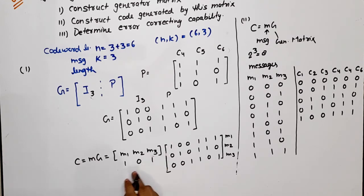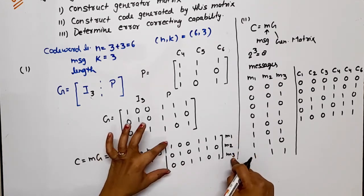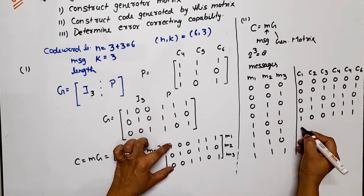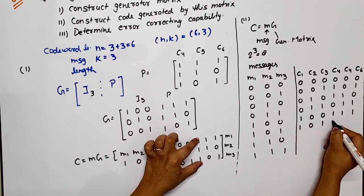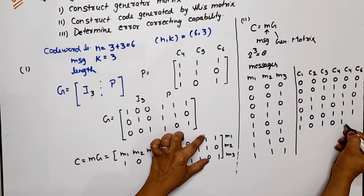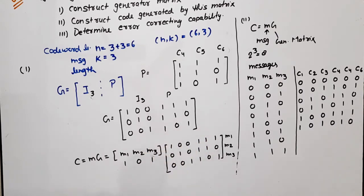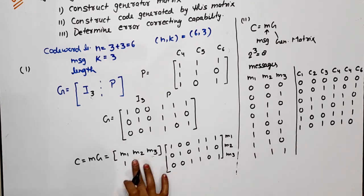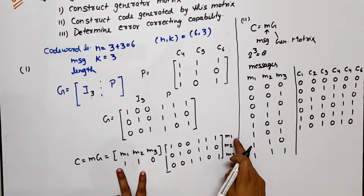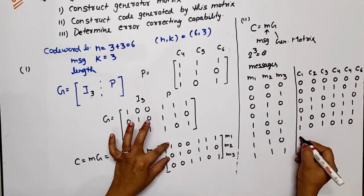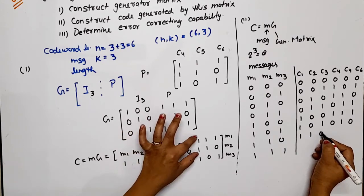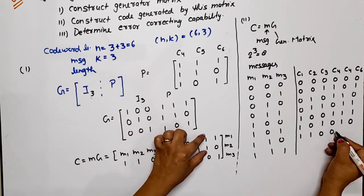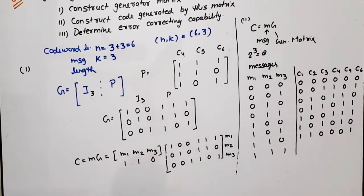For message 110, only M1 and M2 are available. XORing first and second rows: 1 XOR 0 = 1, 0 XOR 1 = 1, 0 XOR 0 = 0, 1 XOR 1 = 0, 1 XOR 1 = 0, 1 XOR 0 = 1. Code word is 110001.